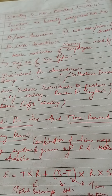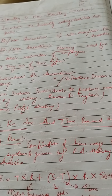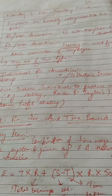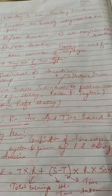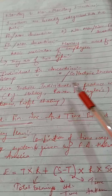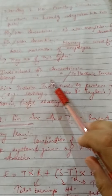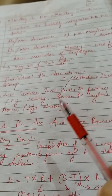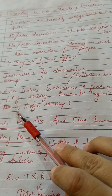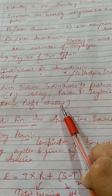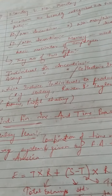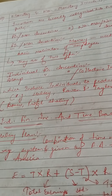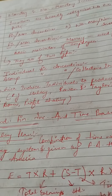Individual financial incentives are those financial incentives which induce individuals to maximize their production. Examples include the Halsey plan, the Rowan plan, and Taylor's incentive plans. These are the plans that deal with individual financial incentives.